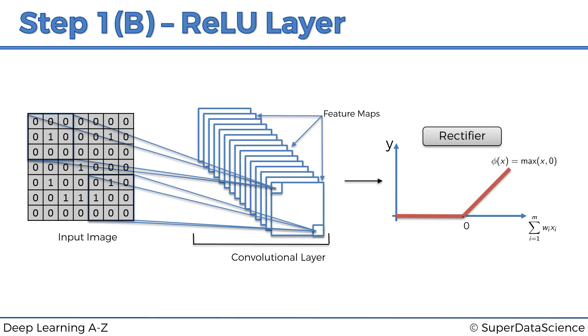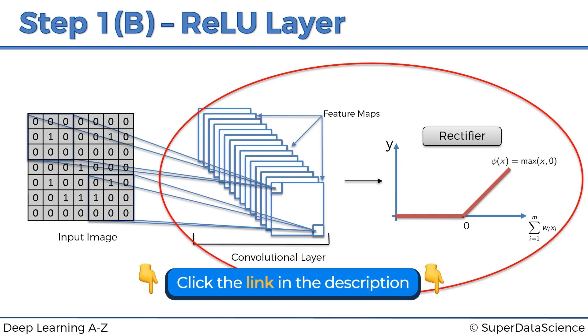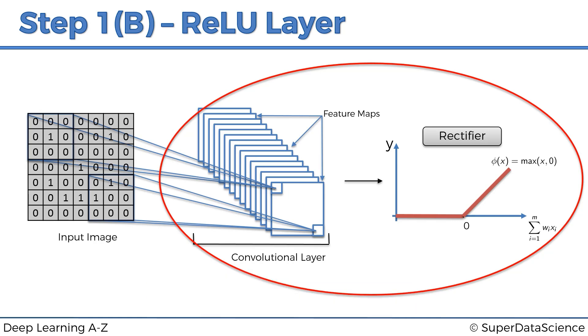Sometimes authors or instructors separate the convolution and the rectifier as two separate steps. In our examples we're just going to consider them just one big step, first the convolution then the rectifier. And the reason why we're applying the rectifier is because we want to increase non-linearity in our image, or in our network, in our convolutional neural network.